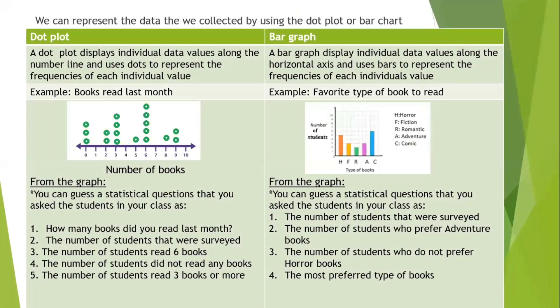We can represent the data we collected by using the dot plot or bar chart. A dot plot displays individual data values along the number line and uses dots to represent the frequencies of each individual data. Example: Books read last month. Here I have two students, each one read two books. Four students, each one read three books. One student read five books. Five students read six books. One student read eight books last month. Two students read nine books.